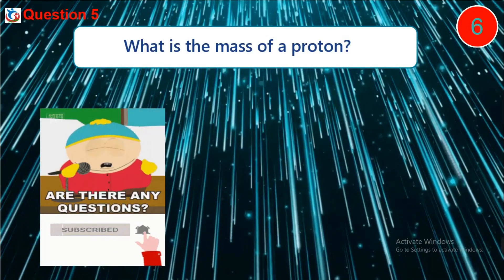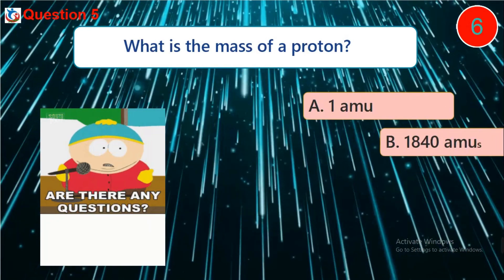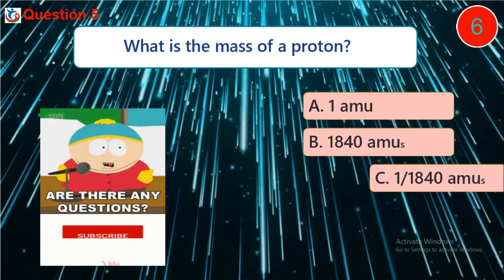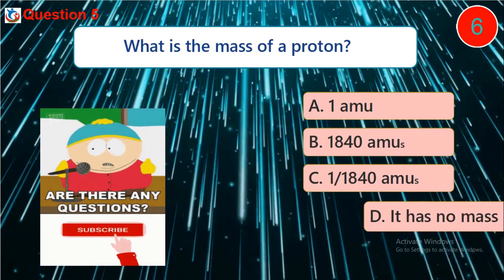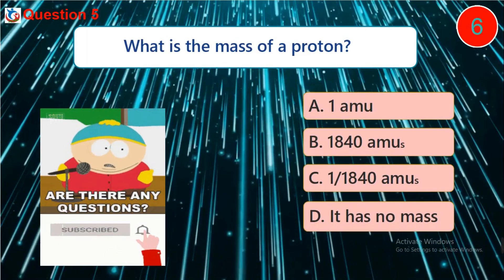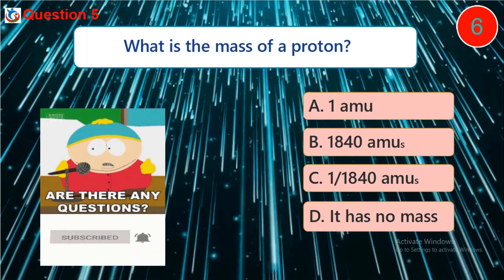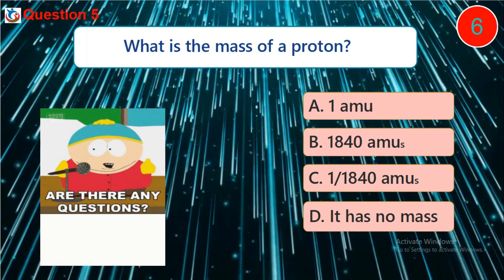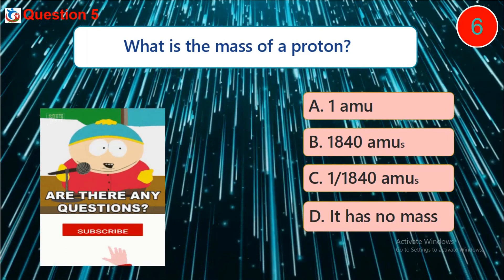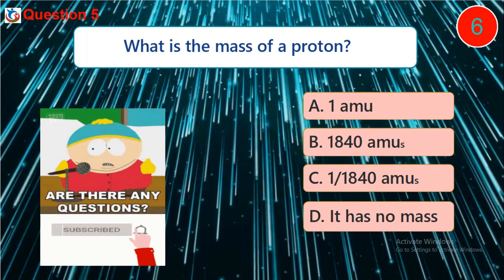Question 5. What is the mass of a proton? A. One atomic mass unit. B. 1840 atomic mass units. C. One over 1840 atomic mass unit. D. It has no mass.